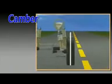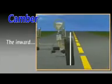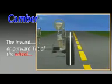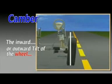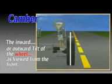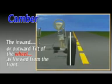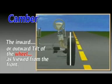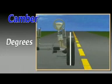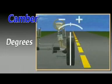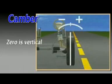Camber is defined as the inward or outward tilt of the wheel at the top as viewed from the front. Camber is measured in degrees. A wheel with zero degrees camber is vertical.